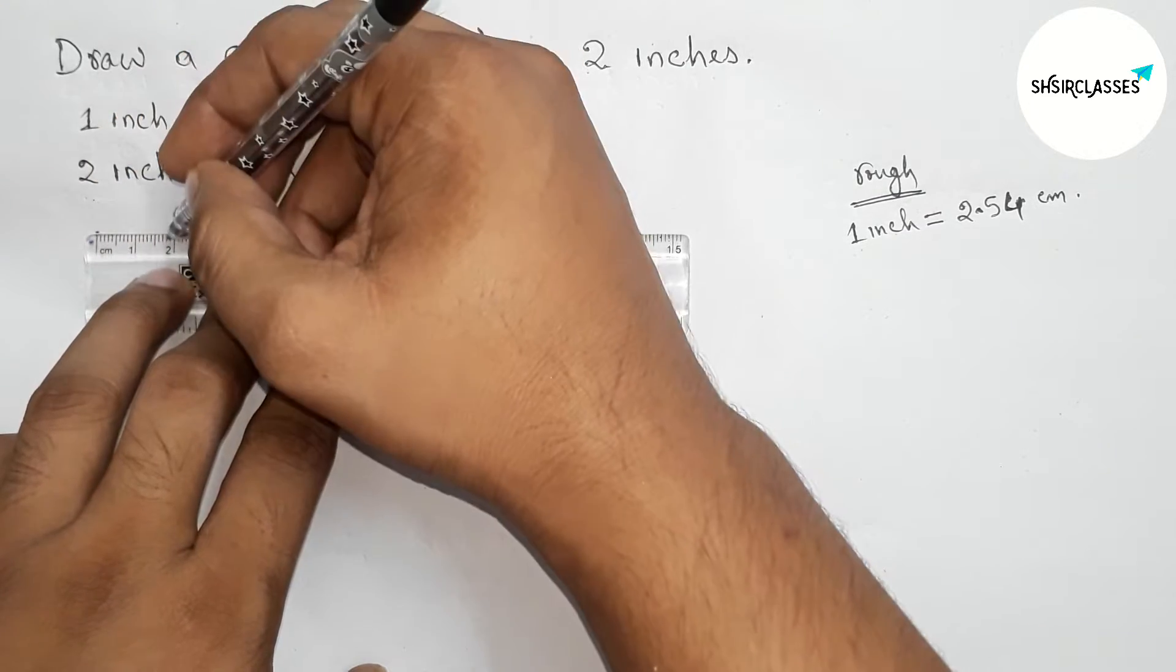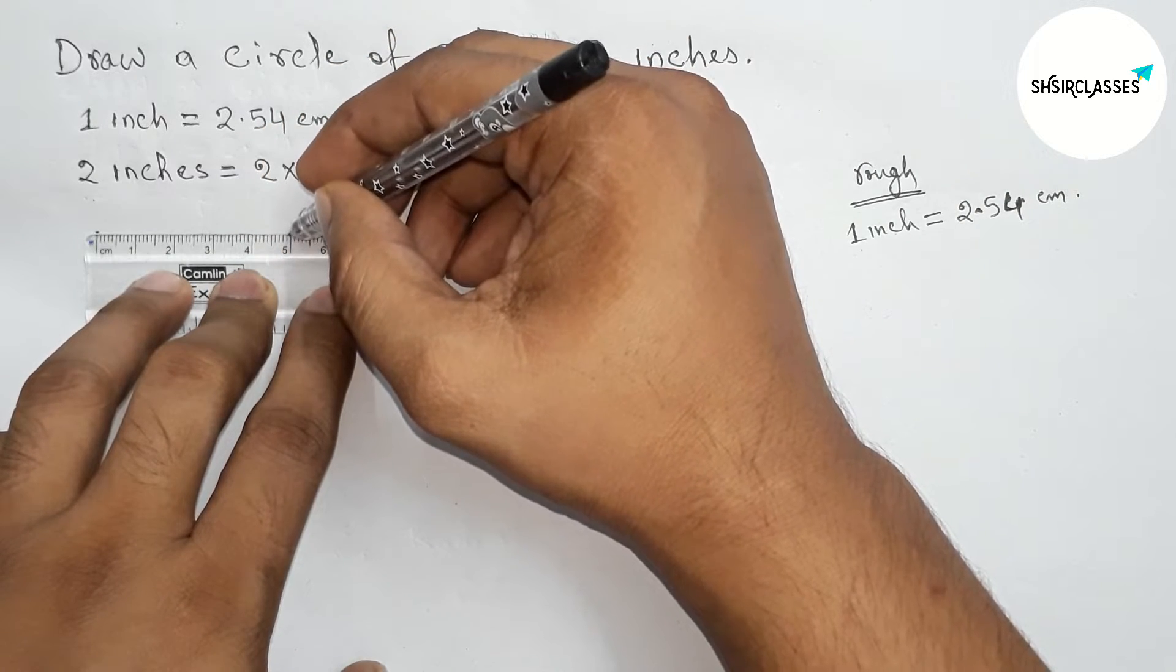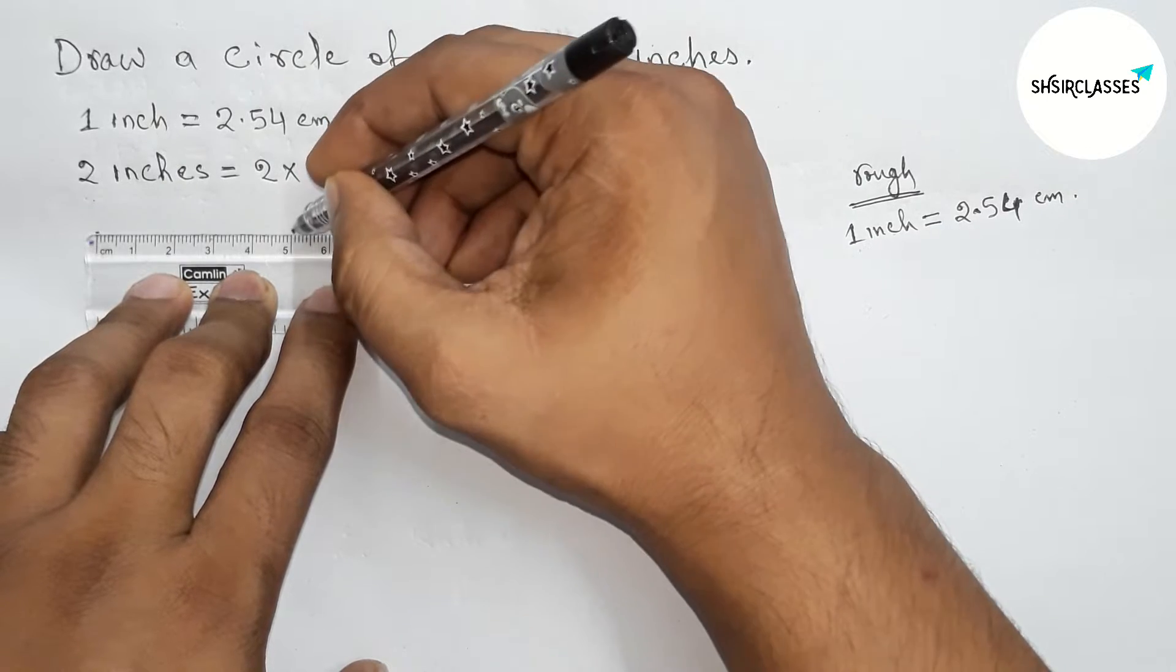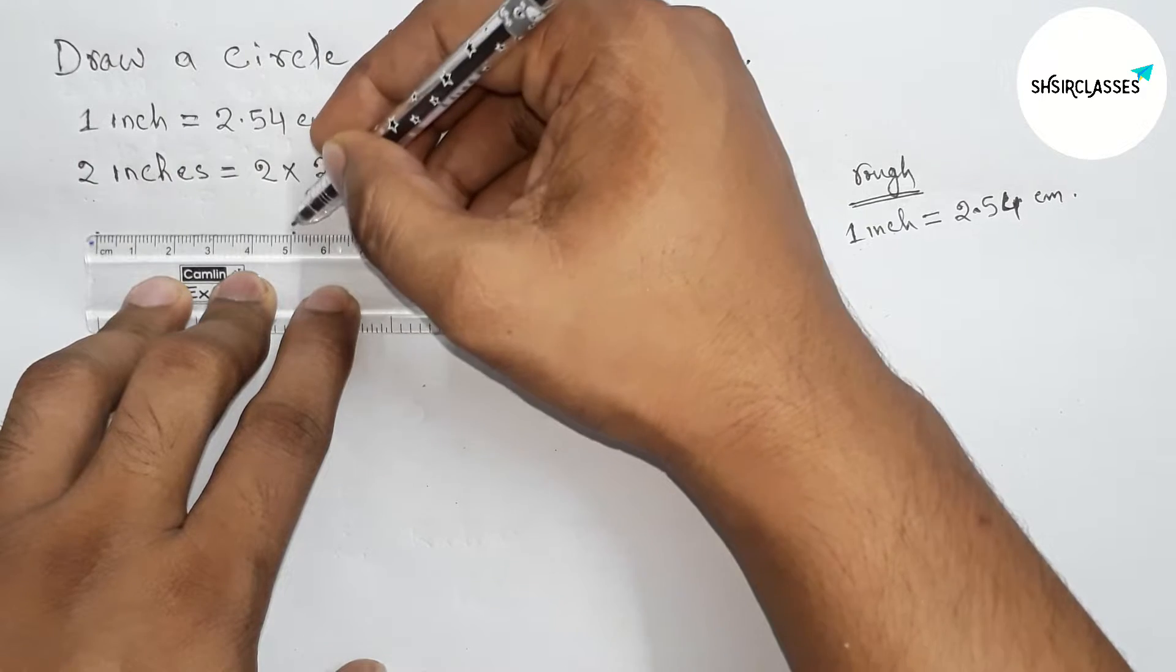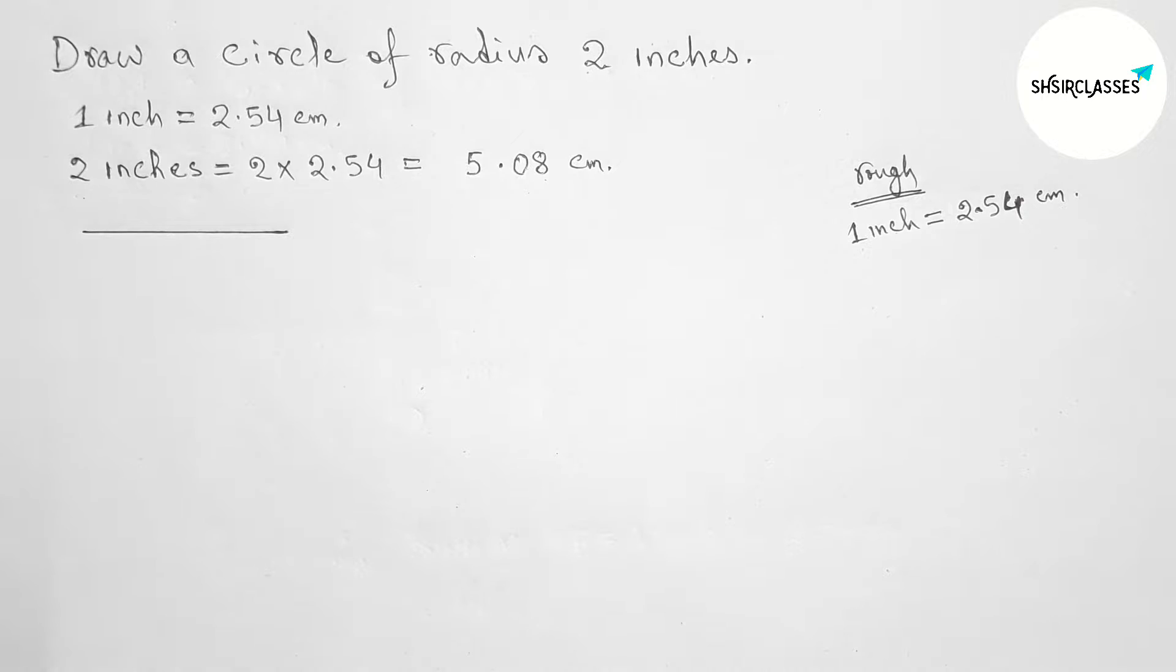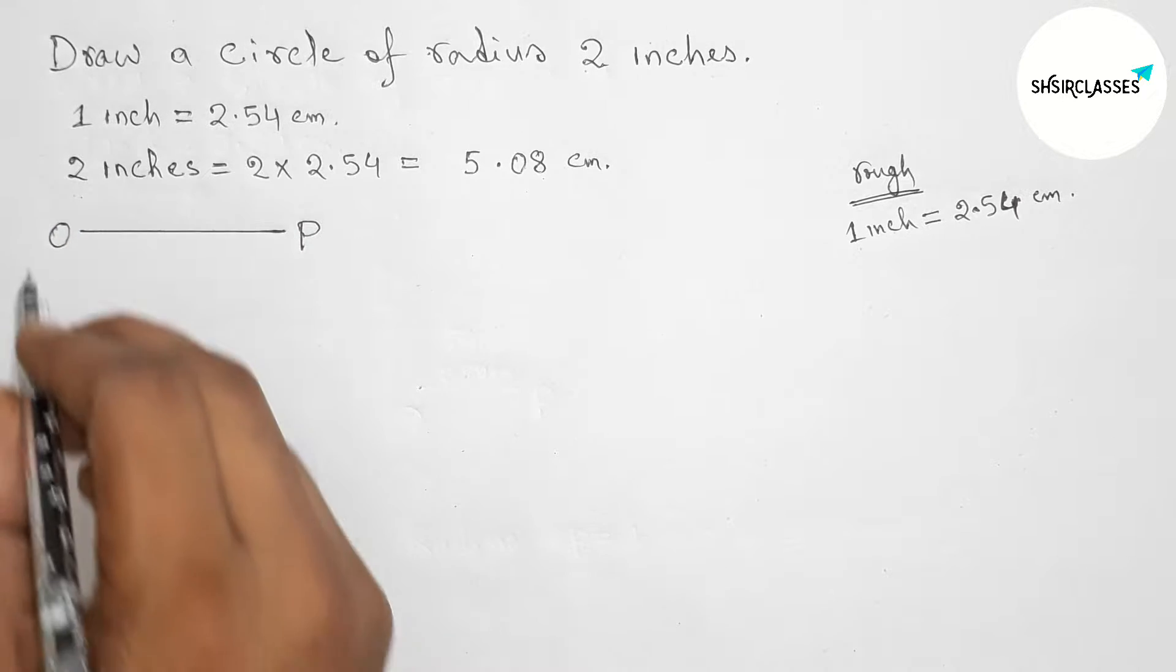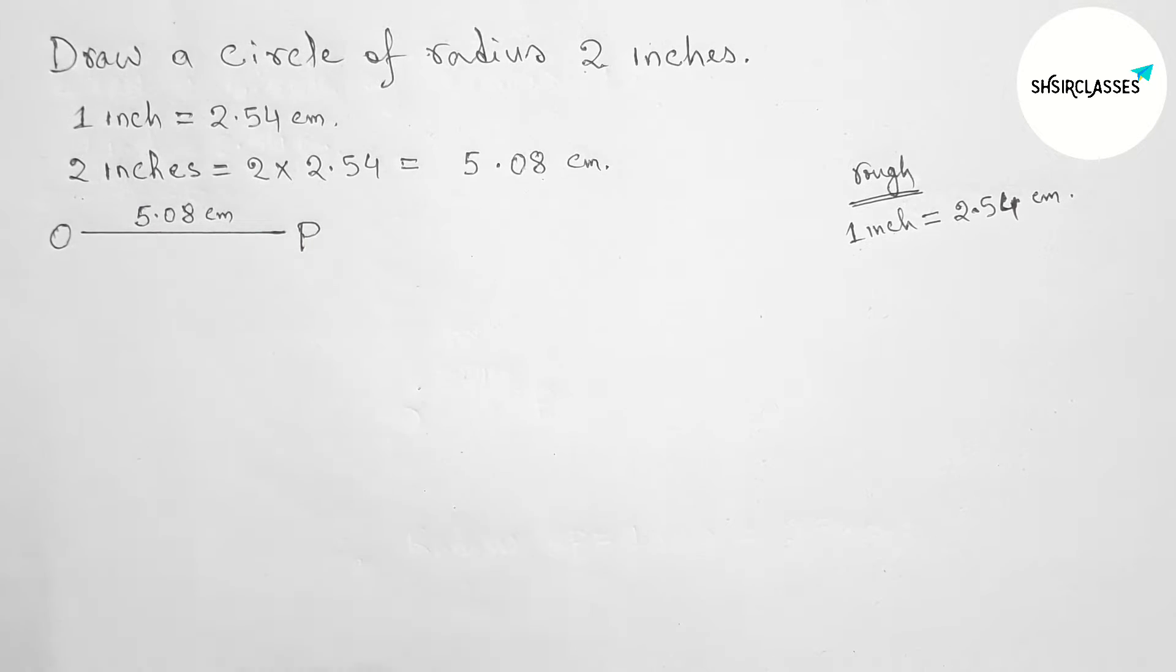Now drawing here a line segment of length approximately 5.08, that is 5.1 centimeters. Now taking here point O and here point P, and OP is 5.08 centimeters.